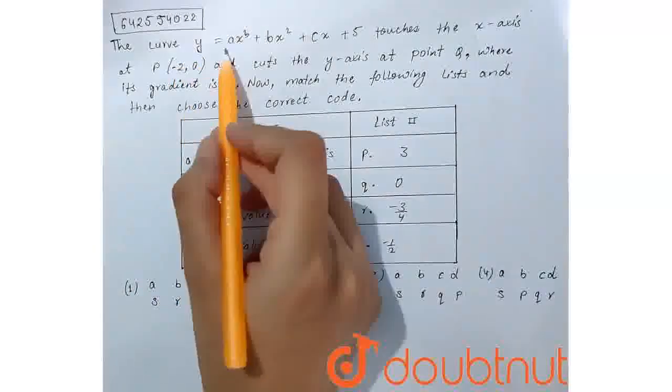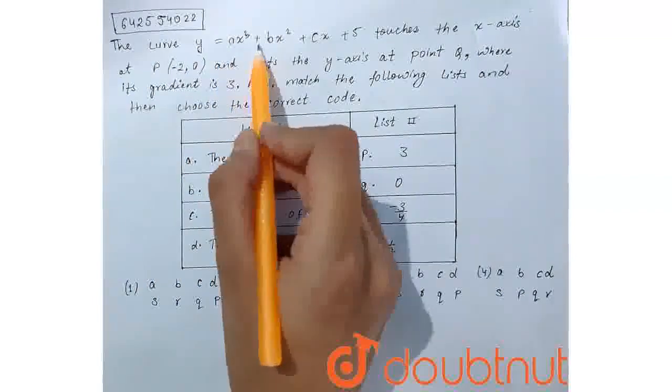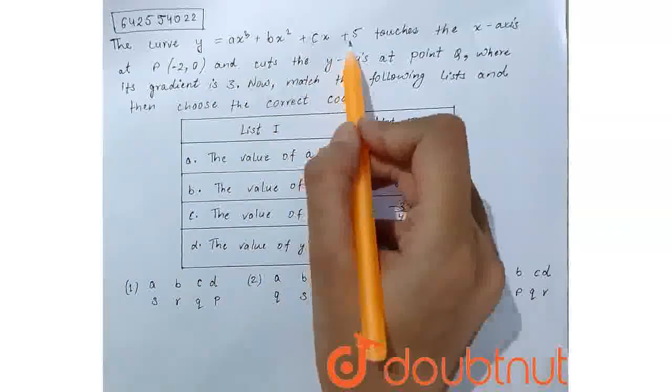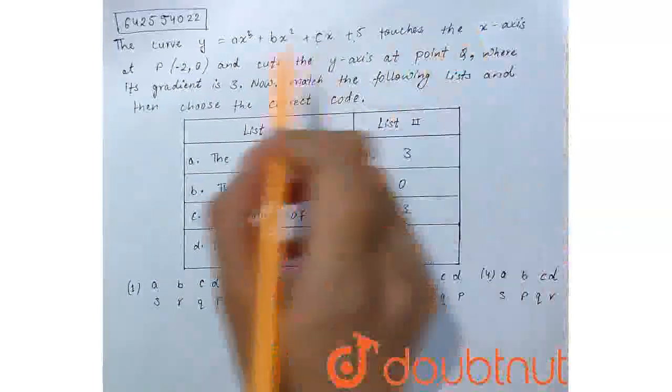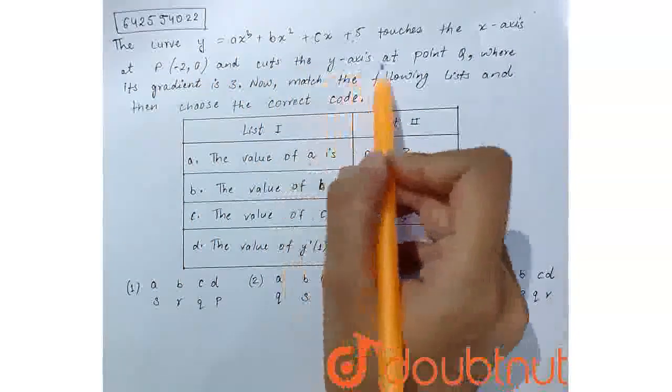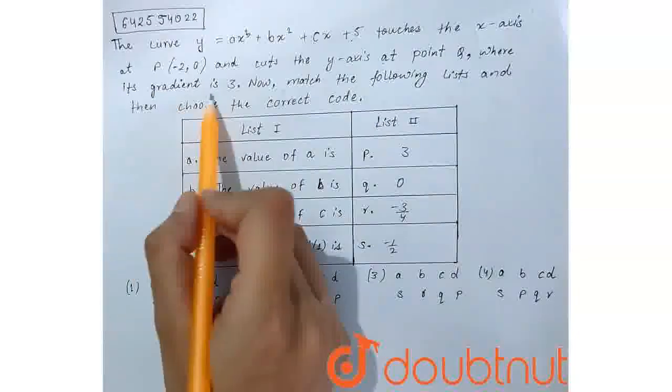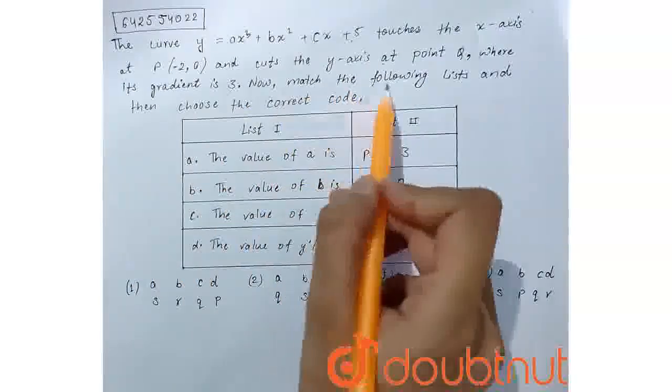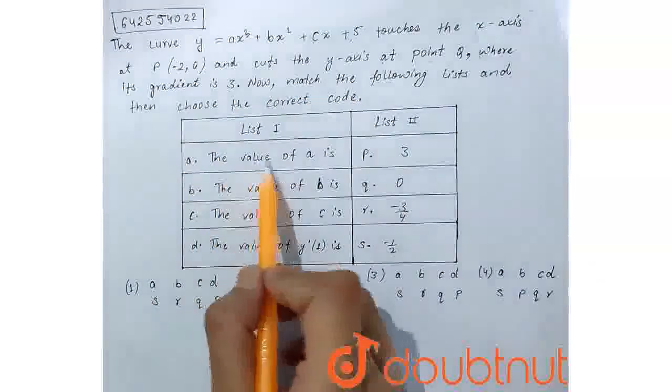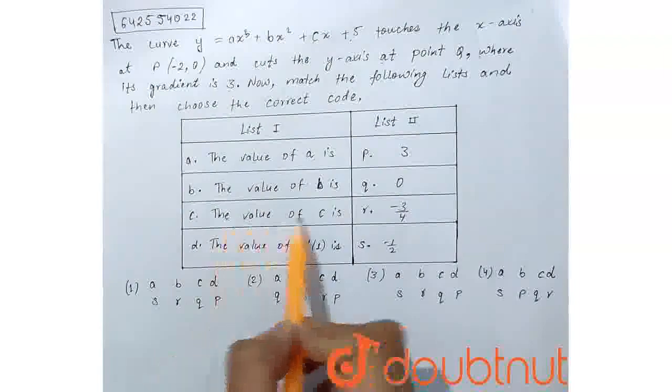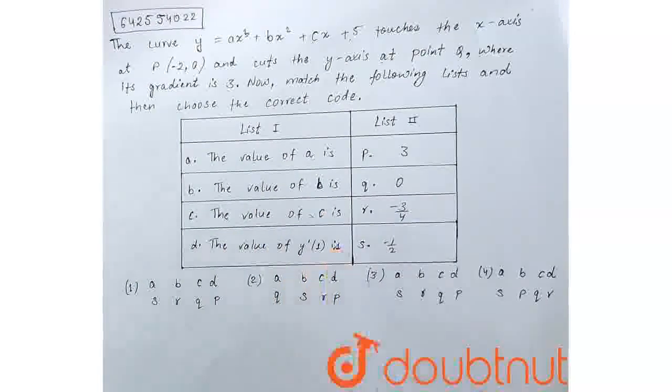In this question, a curve given y equals ax³ plus bx² plus cx plus 5 touches the x-axis at point p(-2, 0) and cuts the y-axis at point q where its gradient is 3. Now match the following list. The value of a is, the value of b is, the value of c is, and the value of y'(-1).